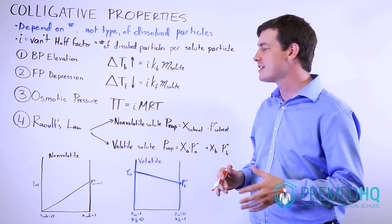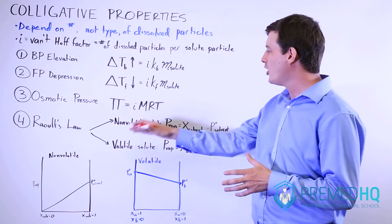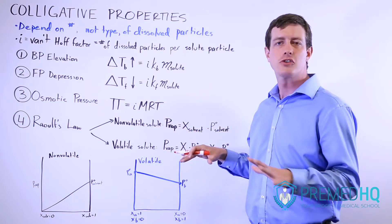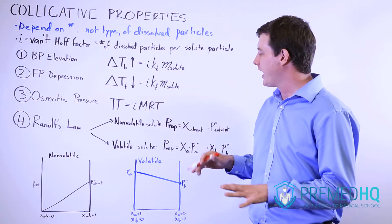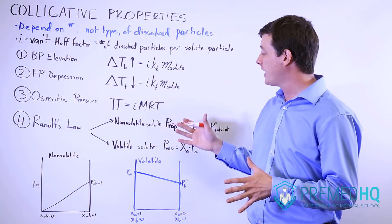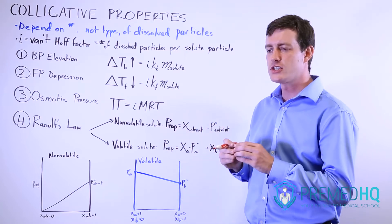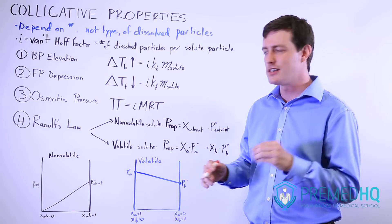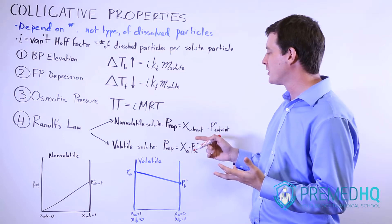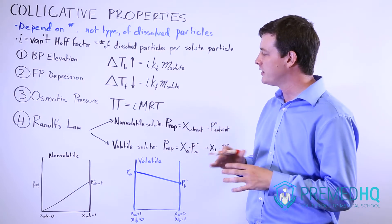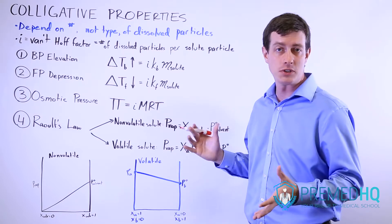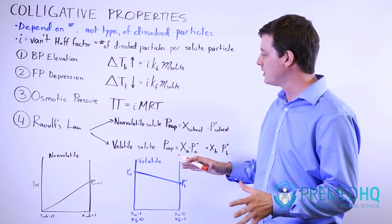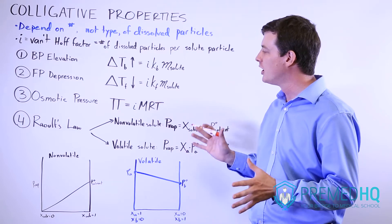The difference between these is that non-volatile solutes are ones that don't contribute their own vapor pressure. Often that means they have such a significant difference in boiling points that the vapor pressure contributed by the solute is negligible, or in other cases it simply does not contribute a vapor pressure whatsoever.